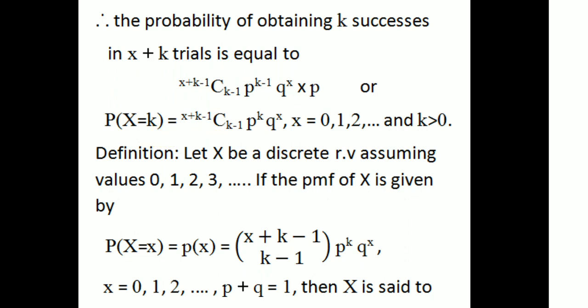P(X) is equal to C(X+K-1, K-1) × P^K × Q^X, where X equals 0, 1, 2, 3, etc., and K greater than 0. Let X be a discrete random variable assuming values 0, 1, 2, 3, etc. The PMF of X is given by P(X = x) = C(X+K-1, K-1) × P^K × Q^X, where X = 0, 1, 2, 3 and P plus Q equals 1.